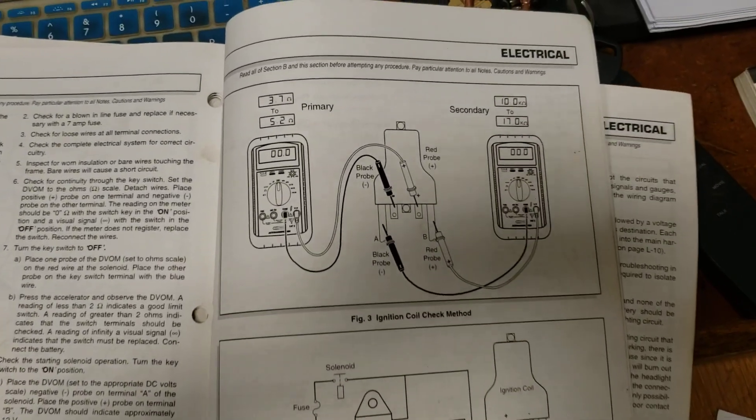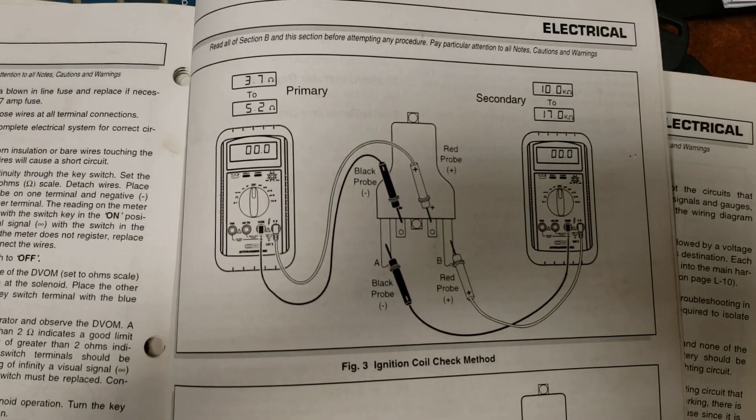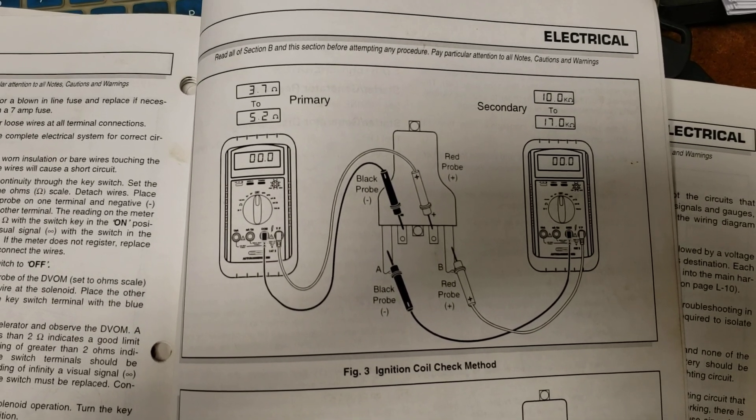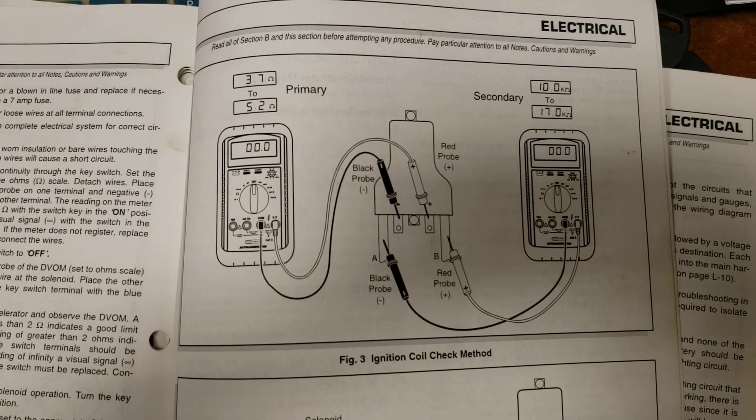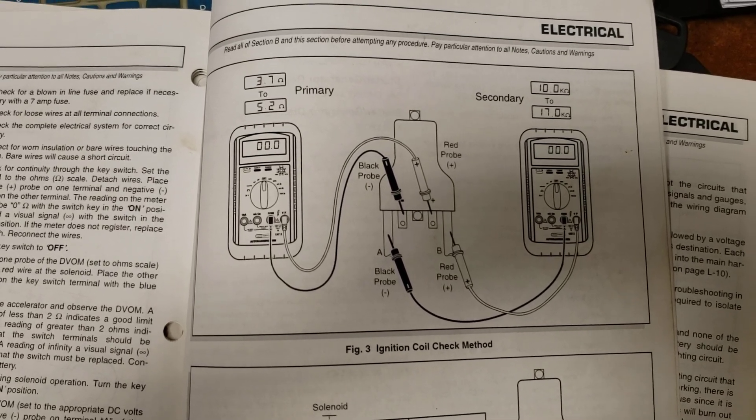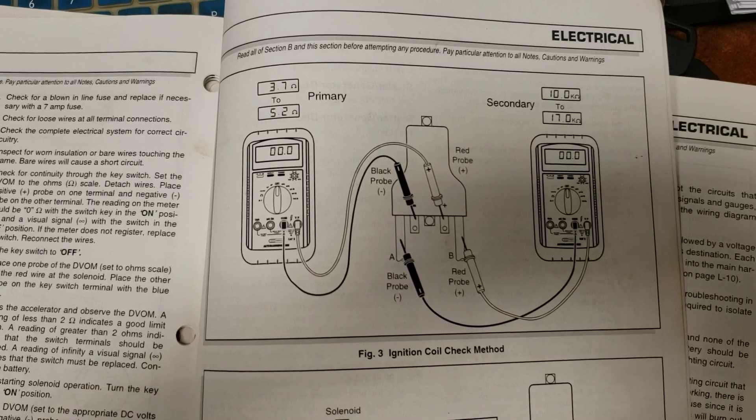And then here, I'll give close-ups. So you can see on the primary, you want between 3.7 and 5.2 ohms. And on the secondary, between 10 and 17 kilo ohms.